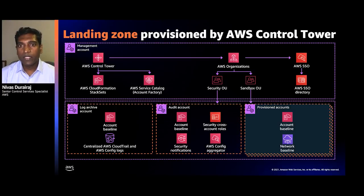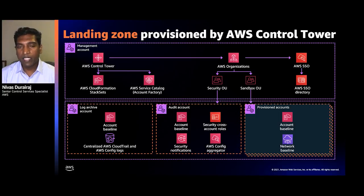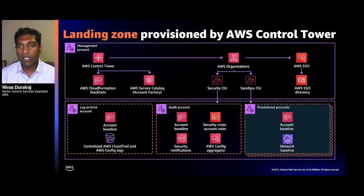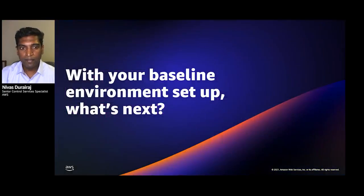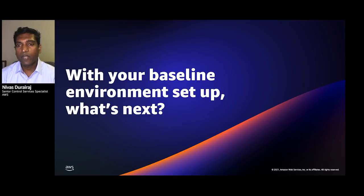With the log archive account, you can manage and track activity across all your accounts. CloudTrail, instantiated in each member account, is sent to the central log archive account. With the security account, Config Aggregator is instantiated there, giving you an overview of Config rules and conformance packs and an understanding of the compliance state of your accounts. With your baseline environment set up, the question becomes: what's next? How else can you customize your environment to meet the needs of your organization?